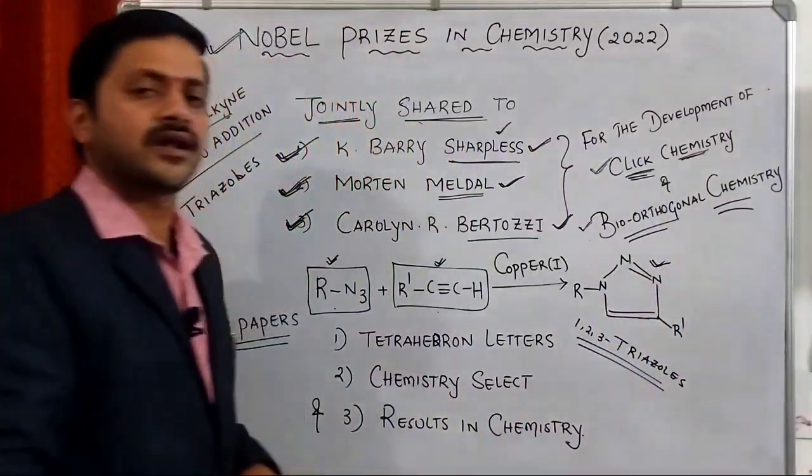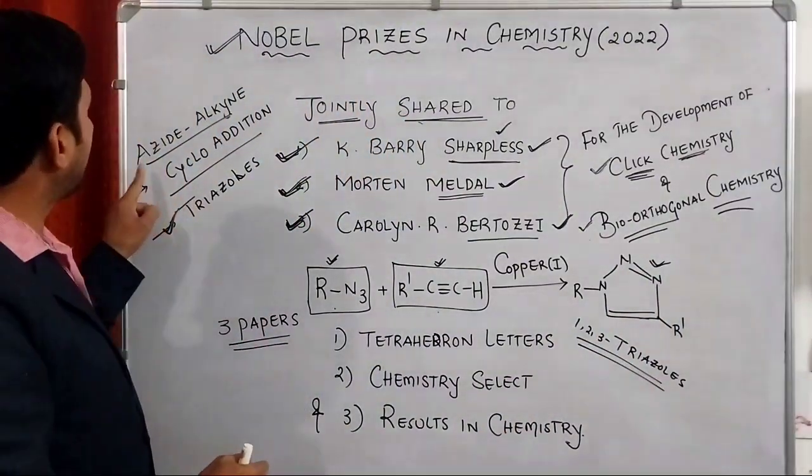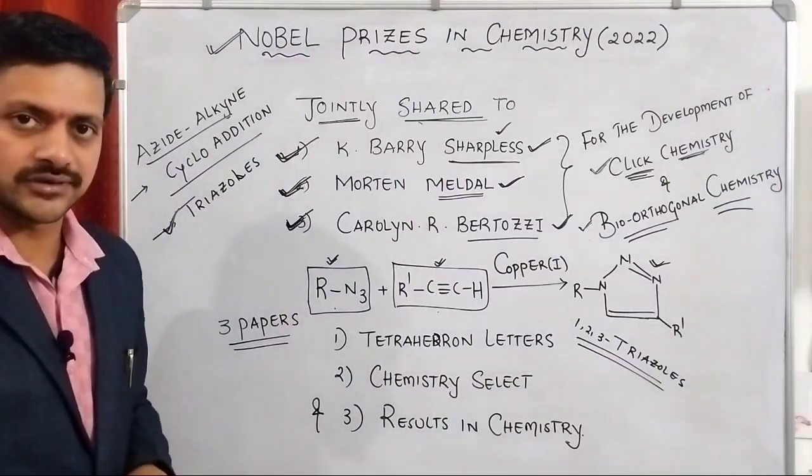Because in the product we are observing a cyclic ring. That's why we are saying it is azide alkyne cycloaddition reaction.